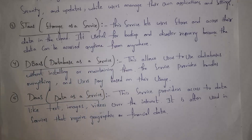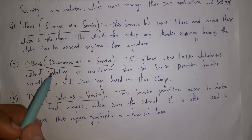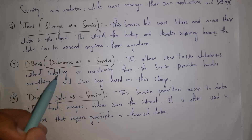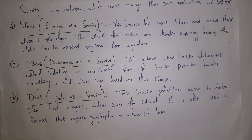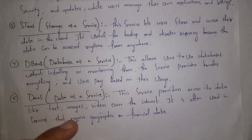The fourth service offered by cloud is Database as a Service, shortly called DBaaS. In cloud, by selecting Database as a Service, we can create and use databases — just install and use the database and the rest is handled by cloud service providers. You pay only for how much time you use the database.